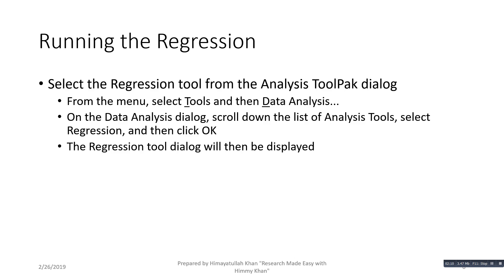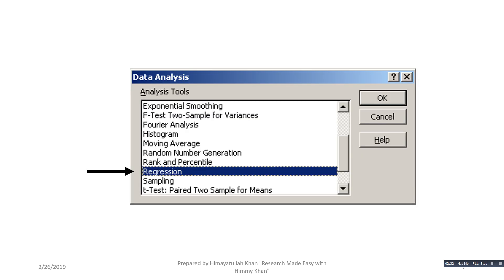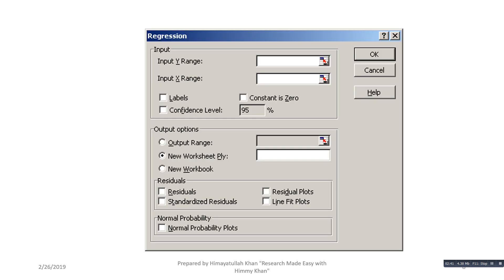To run the regression, select the regression tool from the Analysis ToolPak dialog. From the main menu, select Tools, then Data Analysis. In the Data Analysis dialog, scroll down the list of analysis tools, select Regression, and click OK. The regression tool dialog will then be displayed.